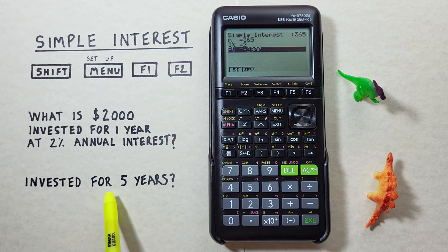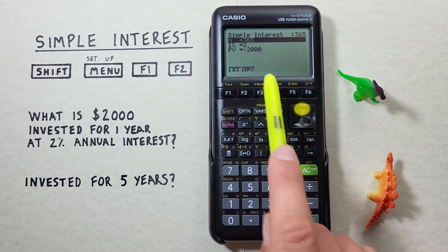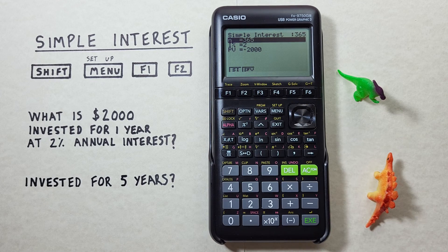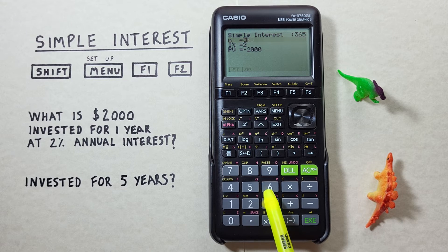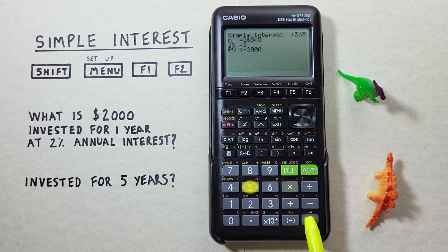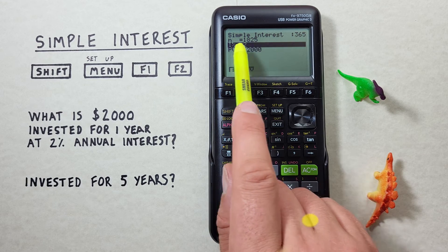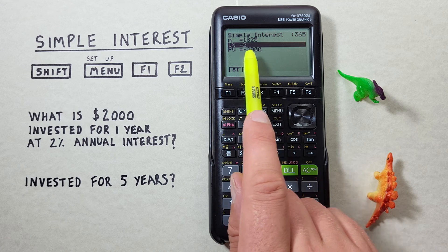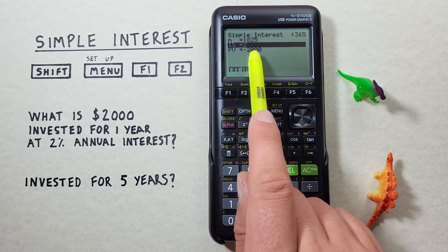What if we have it invested for 5 years? Well if we scroll back up to the top we need to set n to 5 years. To do that we can go 365 for a year times 5 and hit EXE. And you'll see it does that for us. And then our interest and present value or initial value all stay the same.